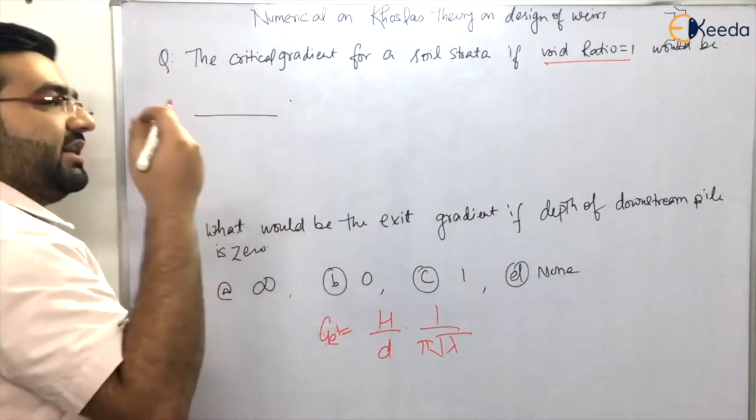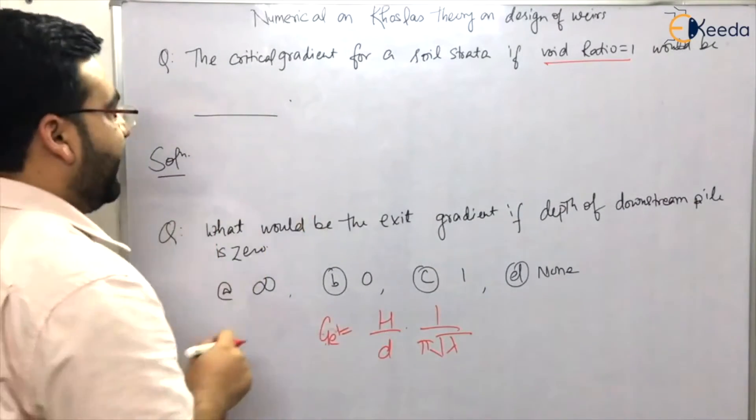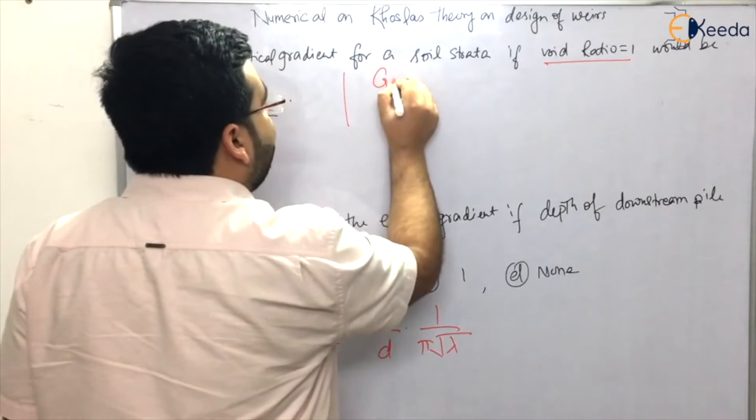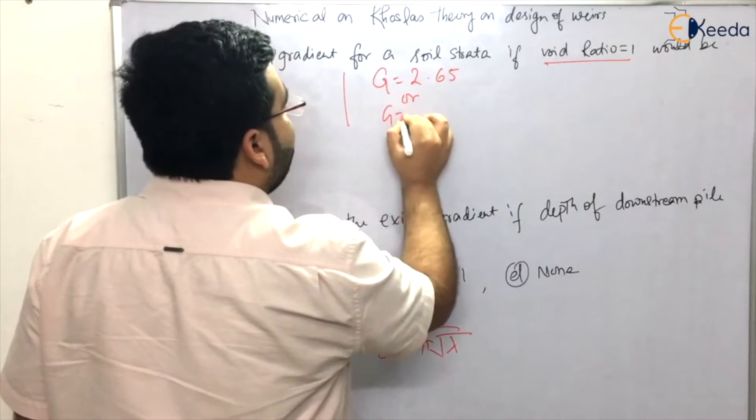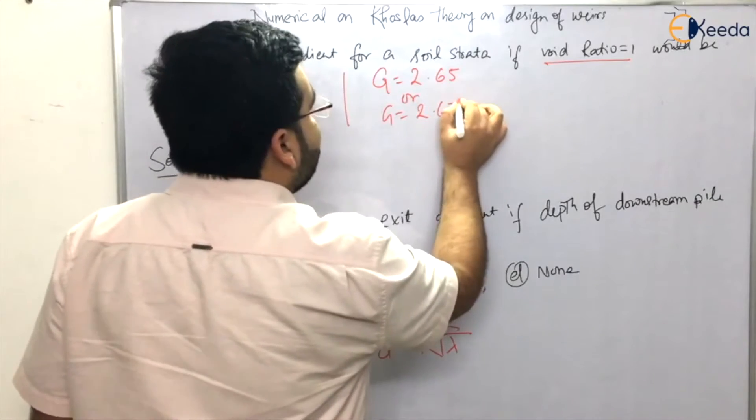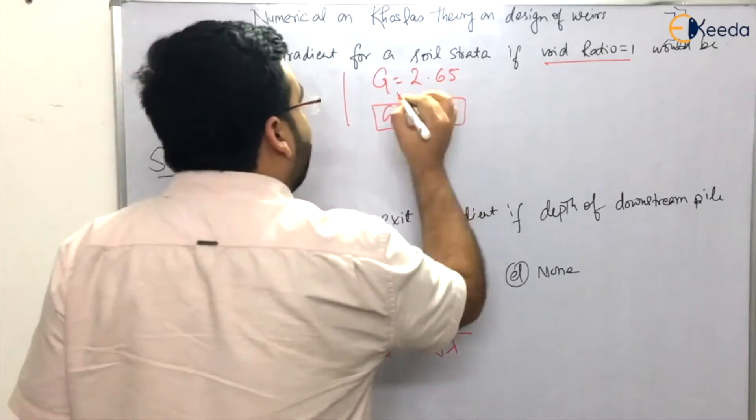In this question there is nothing given about the specific gravity. So I told you that if nothing is given about the specific gravity, either you can take it as 2.65 or you can take it as 2.67, but generally in books it is taken as 2.67.